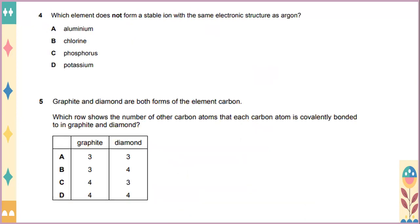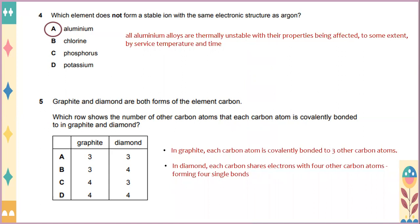Which element does not form a stable ion with the same electronic structure as other? Aluminum. All aluminum alloys are thermally unstable with their properties being affected to some extent by service temperature and time. So in this case, the answer will be aluminum. Graphite and diamond are both forms of the element carbon, which shows the number of other carbon atoms that each carbon atom is covalently bonded to in graphite and diamond. In graphite, each carbon atom is covalently bonded to three other carbon atoms. And in diamond, each carbon shares electrons with four other carbon atoms, forming four single bonds. The answer will be B.